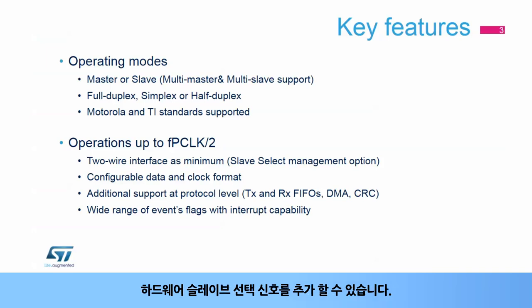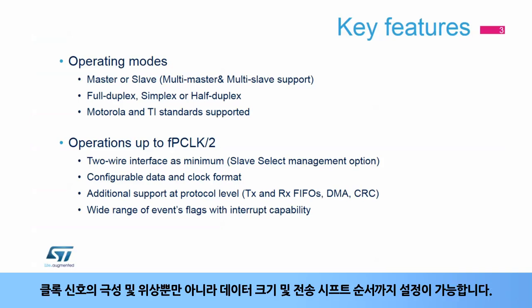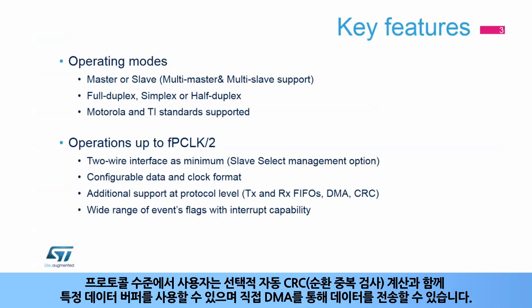An optional hardware slave select control signal can be added. The data size and transmit shift order are configurable, as well as the clock signal's polarity and phase. At the protocol level, the user can use specific data buffers with an optional automatic cyclic redundancy check, or CRC calculation, and transfer data through the direct memory access, or DMA.